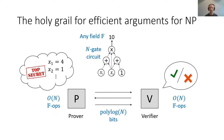In the setting of efficient arguments, a prover wants to convince a verifier that a statement is true — for example, that an N-gate circuit over some finite field F is satisfiable — and ideally the prover should convince the verifier sending only a polylogarithmic number of bits, and neither the prover nor the verifier should do more than a linear amount of work in the size of the circuit.